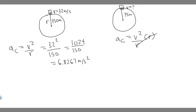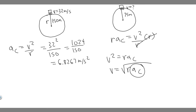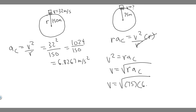What we want to do is solve for v: v squared equals r times a_c, and then v equals the square root of the radius multiplied by the centripetal acceleration. Plugging this in, the radius is 75 meters times the maximum centripetal acceleration, 6.8267. So we take the square root of 75 times 6.8267.